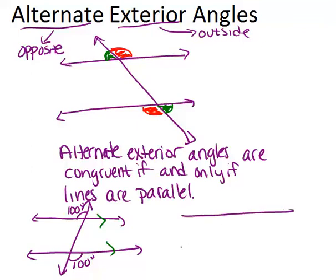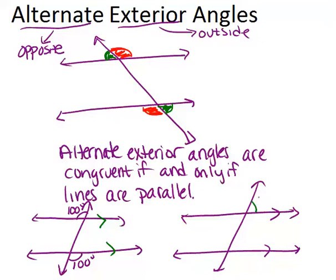The other way around is: if we know that two lines are parallel and they're marked as being parallel, that means any alternate exterior angles have to be congruent. So if this angle over here is 60 degrees, I know that this angle over here also has to be 60 degrees, because it is an alternate exterior angle.